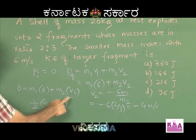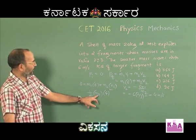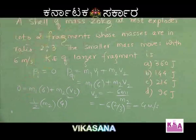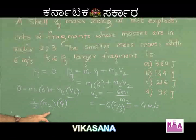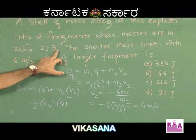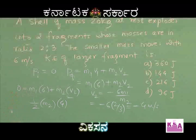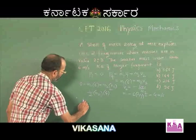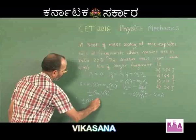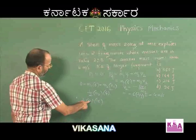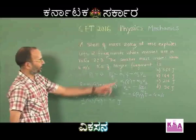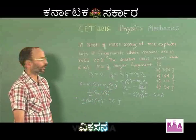Substituting m2 = 12 kg and velocity = 4 meters per second: kinetic energy = half × 12 × 16 = 96 joules. That makes option D perfectly correct.